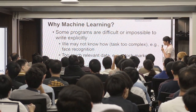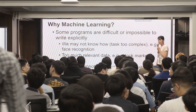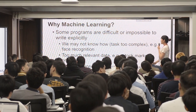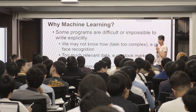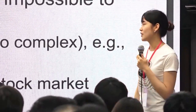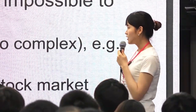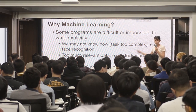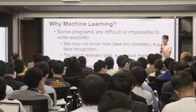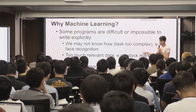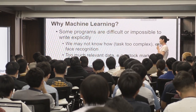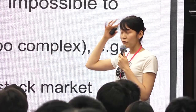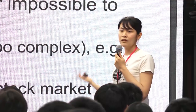Here are some reasons why we do machine learning. First, some programs are too difficult to write using C++ or Python with if-else functions. For example, for facial recognition, we cannot manually write rules like 'this is an eye, this is a nose.' Second, there's too much relevant data — for stock market prediction, you have interest rates, earthquakes, and many other events happening every day, with too much noise mixed in.